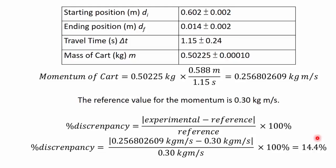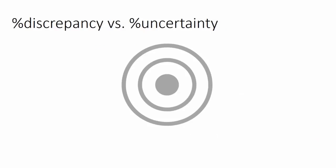And to explain that I like to use an analogy of hitting a target. So here I have a target and the middle of the target is basically our reference value, that's the target we want to hit. We want our experimental value to be exactly dead on to the reference value.